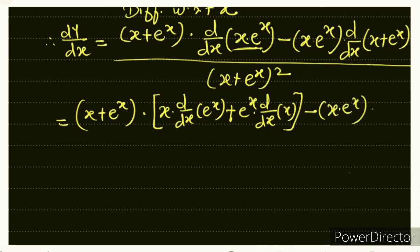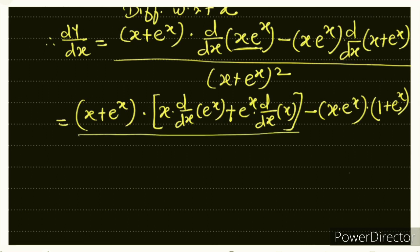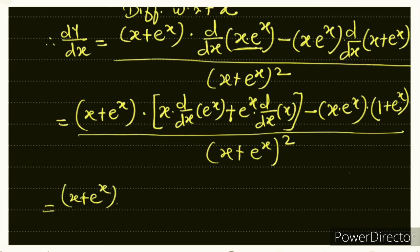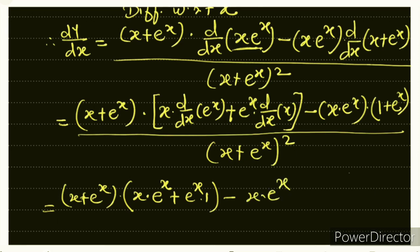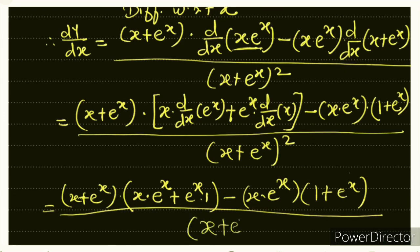For the second derivative, d/dx(x + eˣ) = 1 + eˣ. So we have: (x + eˣ)·(x·eˣ + eˣ) − (x·eˣ)·(1 + eˣ), all over (x + eˣ)². In the numerator, taking eˣ common from the first bracket gives (x + eˣ)·eˣ·(x + 1) − x·eˣ·(1 + eˣ).